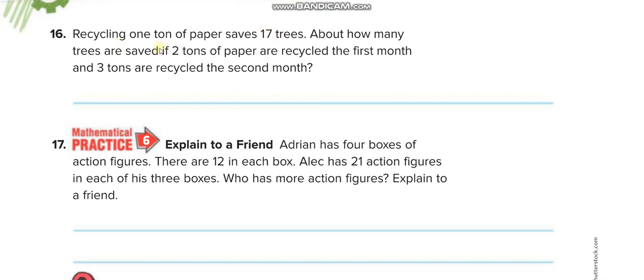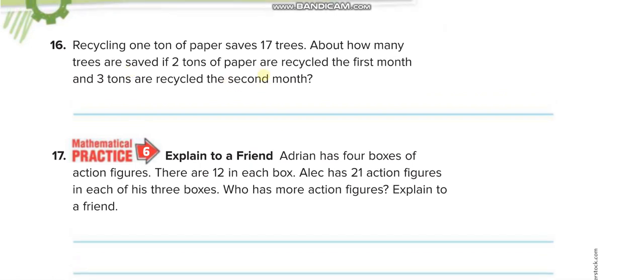Recycling 1 ton of paper saves 17 trees. About how many trees are saved if 2 tons of paper are recycled the first month and 3 tons are recycled the second month? So first, for the first month, 17 times 2. For the second month, 17 times 3, and then you will add both the answers.